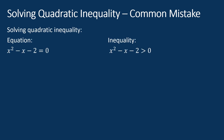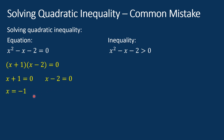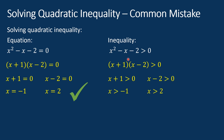Let's see this example. We have a quadratic equation and a similar quadratic inequality. To solve the quadratic equation, we factorize it. We get x plus 1 equal to 0 and x minus 2 equal to 0, hence x equal to negative 1 or x equal to 2. If we repeat the same process for the quadratic inequality, you will find that the solutions will be x greater than negative 1 and x greater than 2. However, this is not correct.